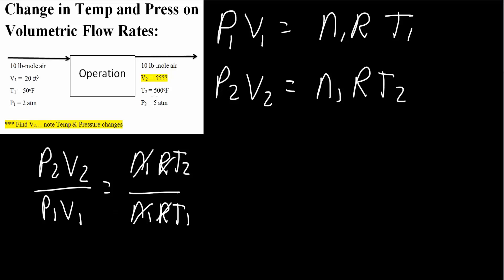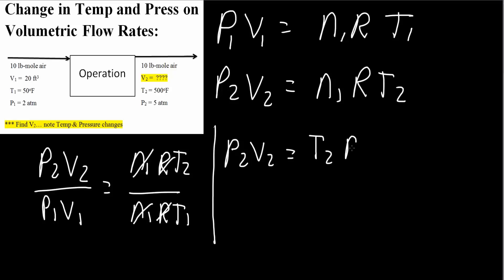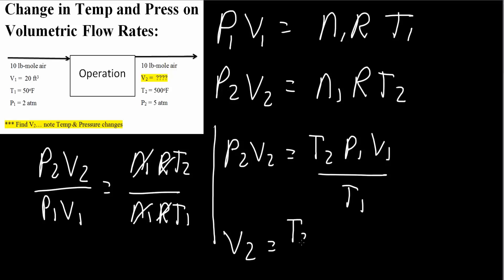We want to find V2. We can rearrange by multiplying: P2·V2 equals T2 times P1 times V1 divided by T1. Then dividing both sides by P2, we get V2 equals T2 times P1 times V1 divided by T1 times P2.